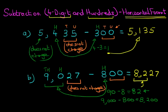And where did that 82 come from? It's from our workings over here. So it really is very simple. The subtraction of a four-digit number and hundreds using the horizontal format.